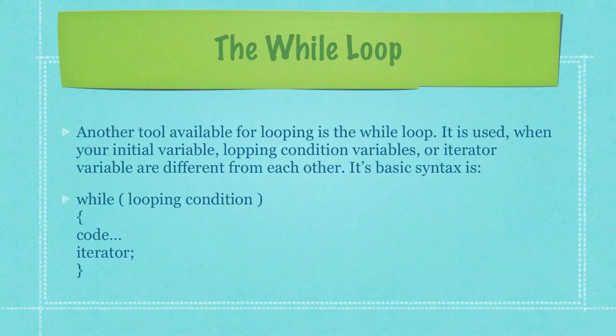Another tool available for looping is the while loop. It is used when your initial variable, looping condition variables, or iterator variable are different from each other. Its basic syntax is while followed by just the looping condition.